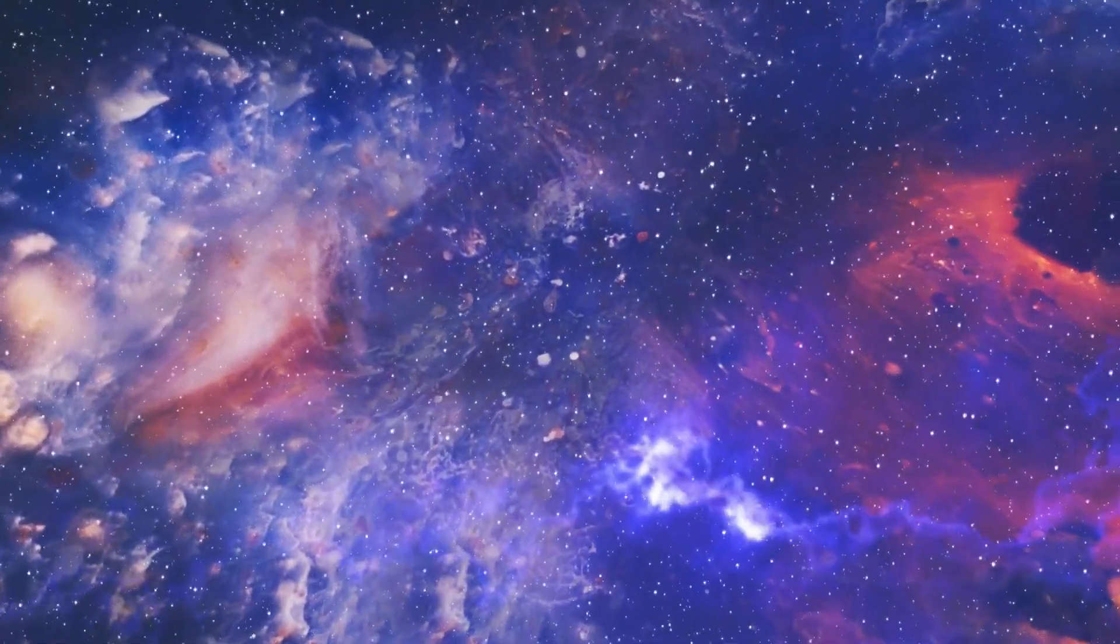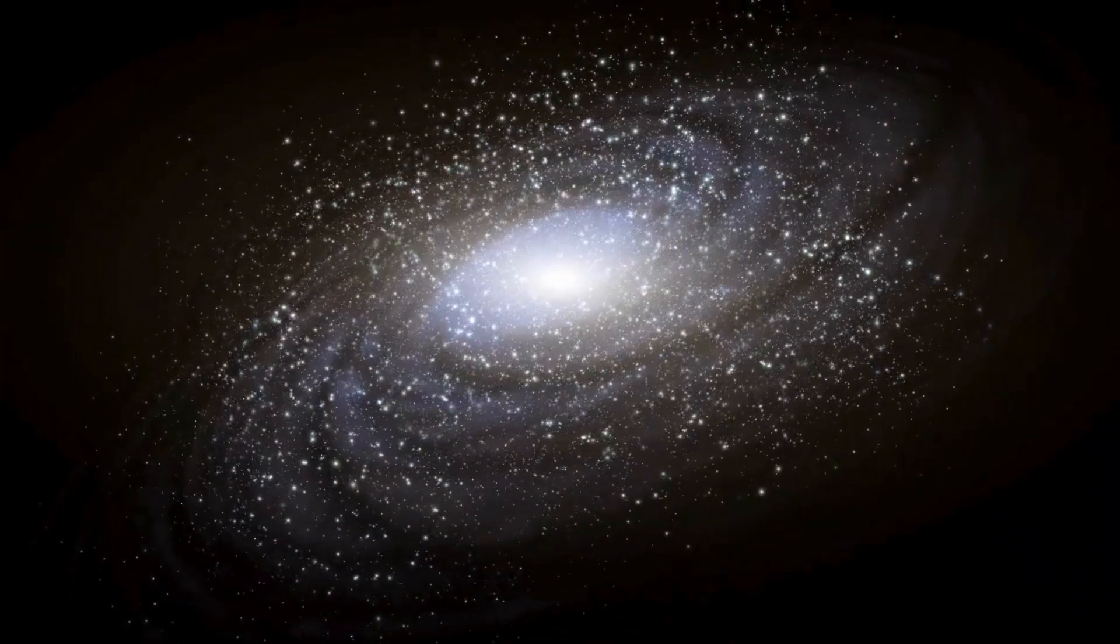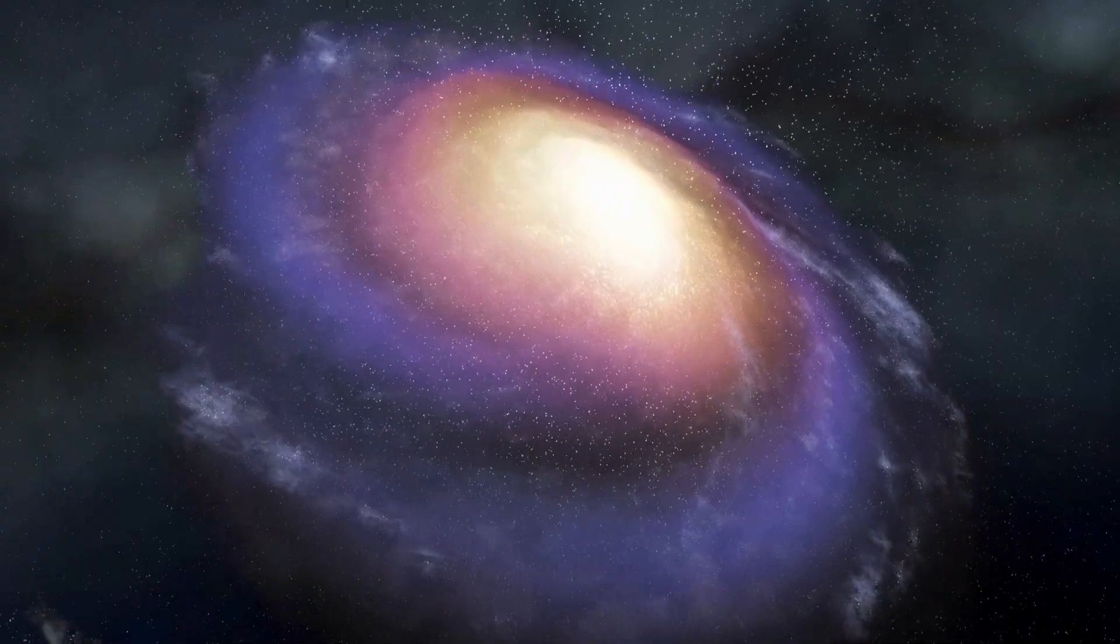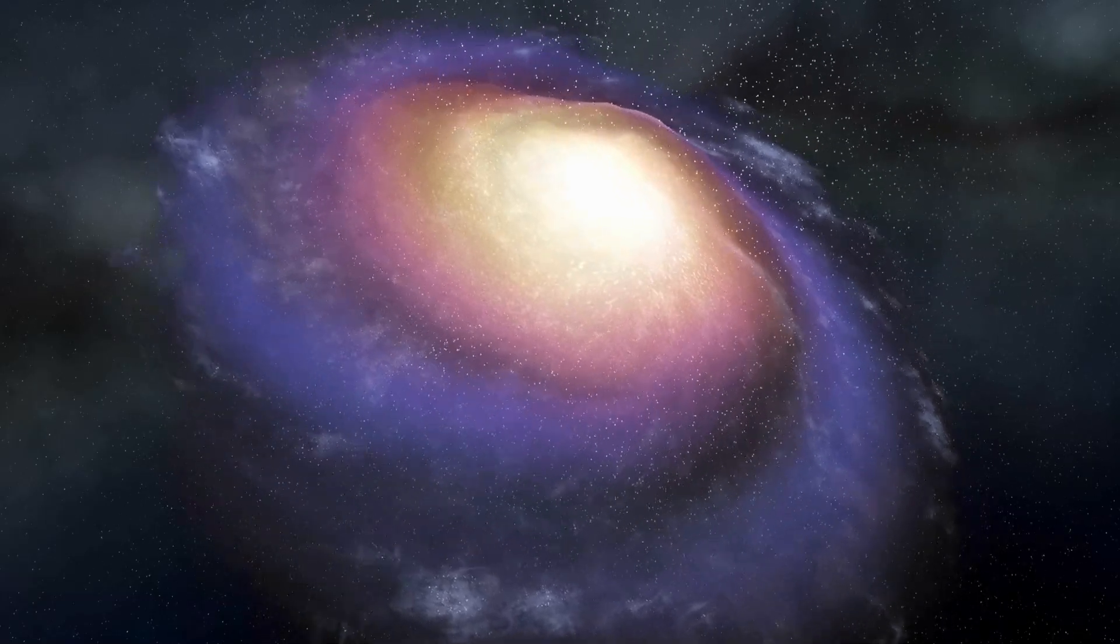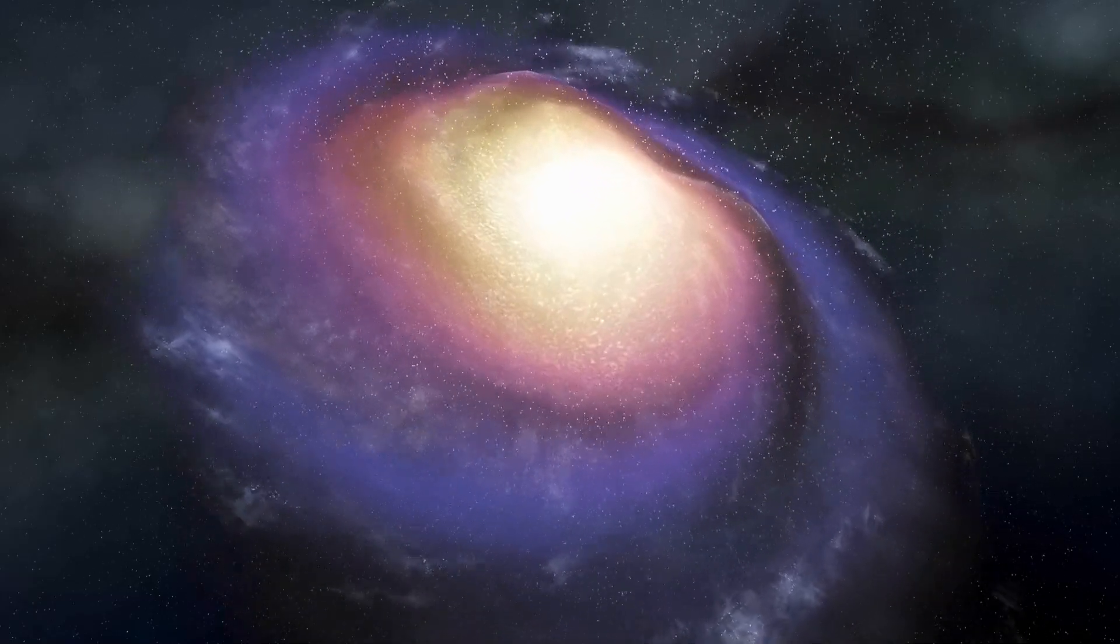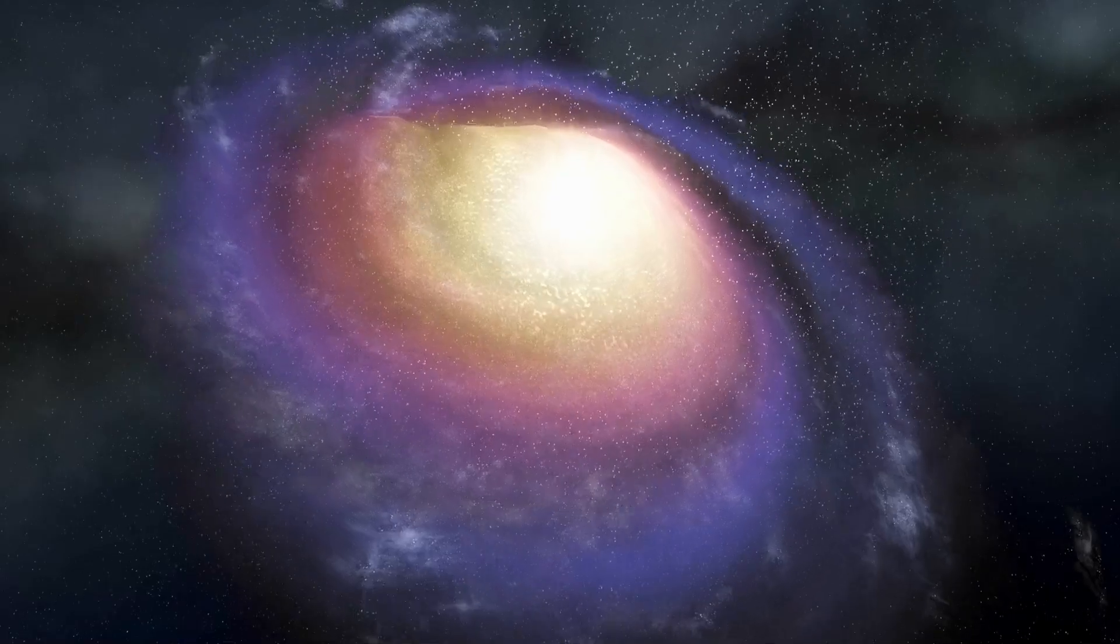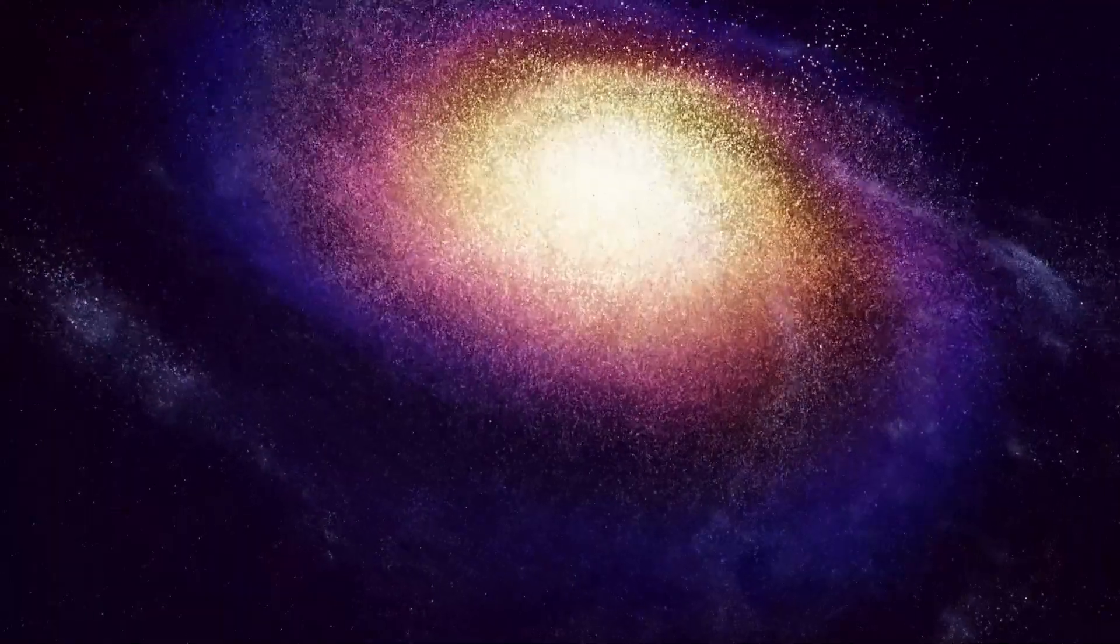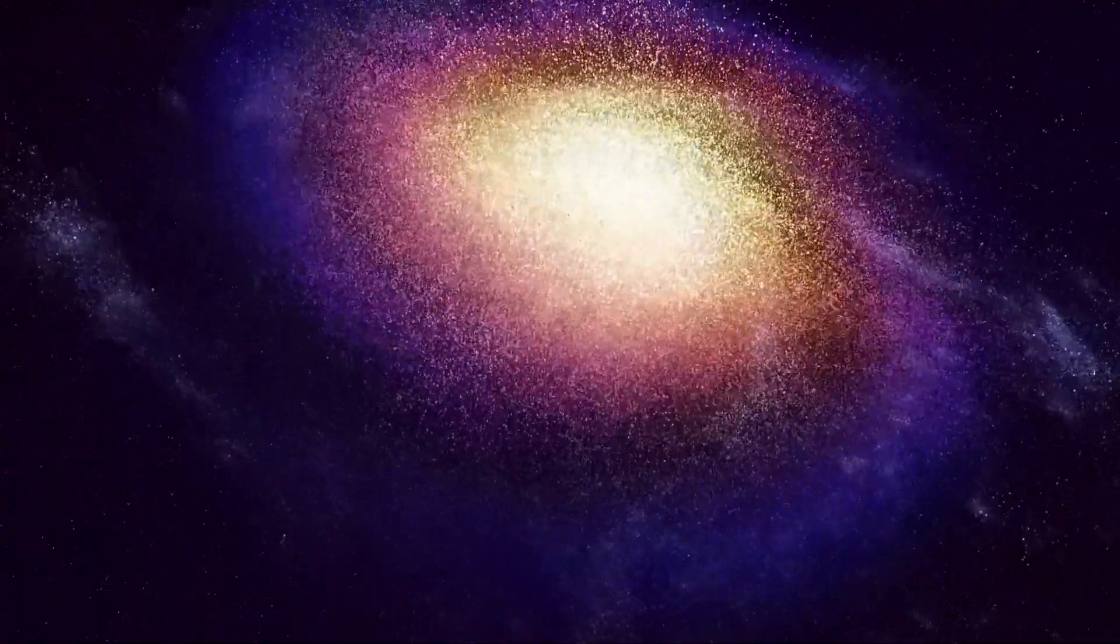In September 2021, Webb captured the first-ever direct image of an exoplanet, revealing the presence of HIP 65426b, a massive gas giant located light-years away from Earth. This monumental achievement marked a significant milestone in the field of exoplanetary science, offering researchers a tantalizing glimpse into the diverse array of worlds that populate our galaxy.